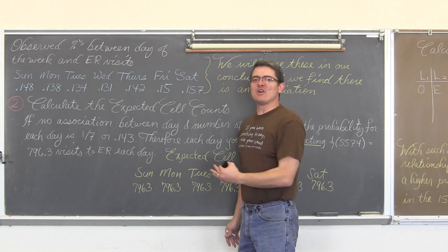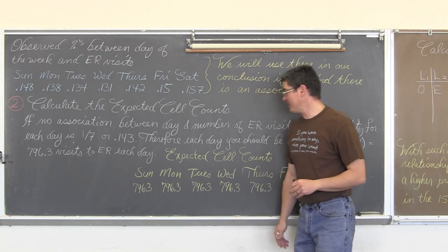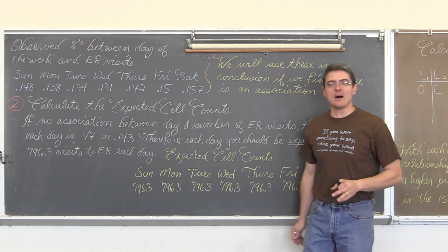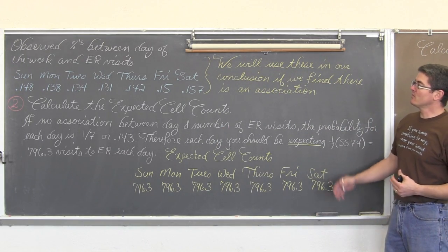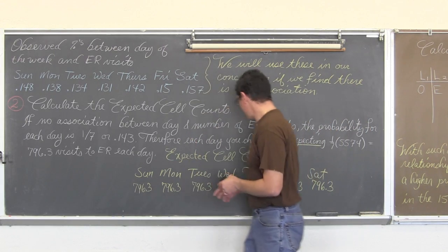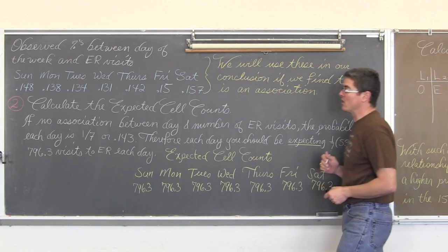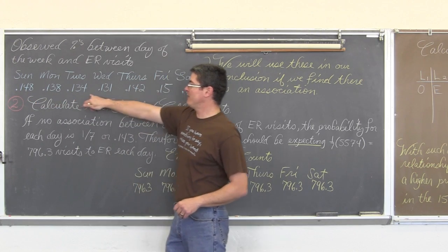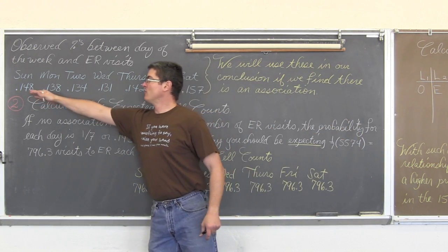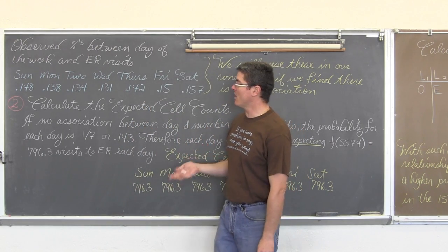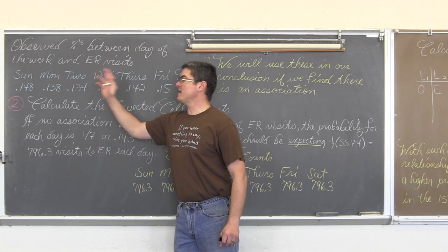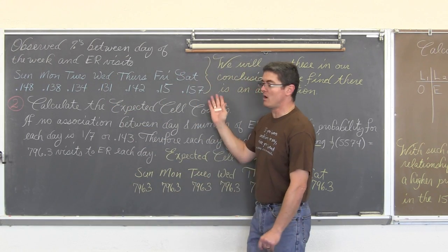Now if you take all those observed values that I just had on our problem that came up to be 5574 observations or ER visits. So we are going to take each of those count values and divide them by 5574 to get a percentage of visits. So on Saturday we had 14.8% of all visits to the ER. Monday represented 13.8% of all visits. Tuesday 13.4%, Wednesday 13.1%, and so on.